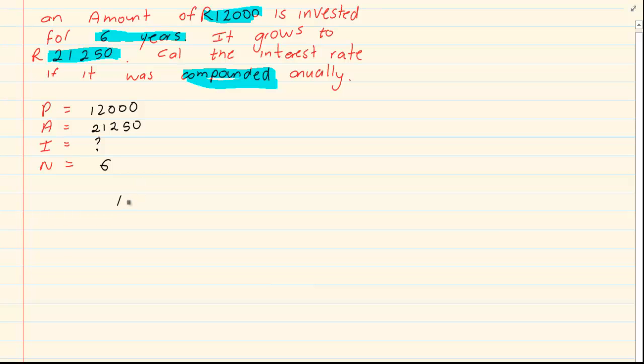Number two, which formula? We know it is a compound formula because they had used the word compounded. Now, we simply substitute what we have. We have that A is equal to 21,250 rand is equal to 12,000(1 + I)^N. We don't have our I but we have that our N is 6. So, we substituted what we have.